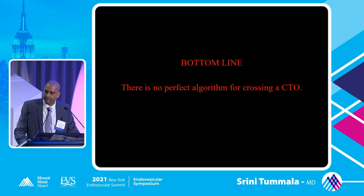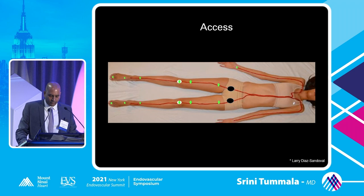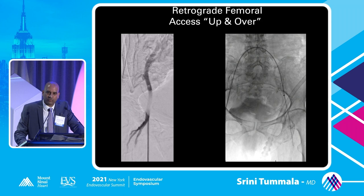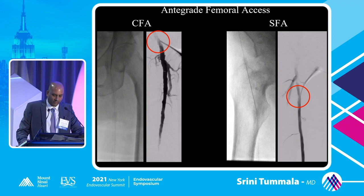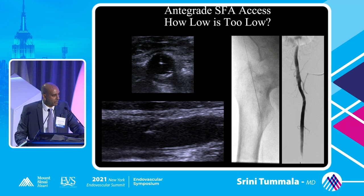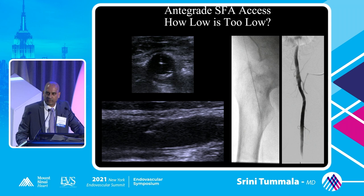Now what about access? We've got all these access points — brachial, radial, all the way down to the toes. When tackling a FEMPOP CTO, the most common access is probably the up-and-over technique. Don't forget about antegrade CFA and antegrade SFA. If you're going to puncture the proximal SFA, you can typically go down to the lesser trochanter — under ultrasound guidance on a relatively healthy vessel — with no problems in terms of bleeding complications, hematomas, or pseudoaneurysms, whether using manual compression or closure devices.